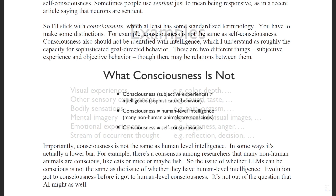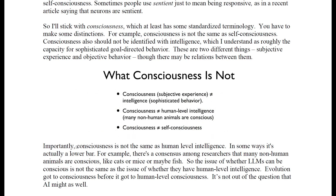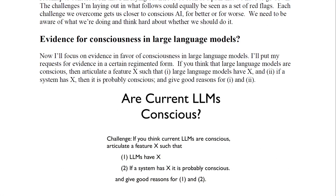It's important to note that consciousness is not synonymous with human-level intelligence. Researchers widely agree that many non-human animals such as cats, mice, and even fish exhibit consciousness. Therefore, the issue of whether large language models can be conscious is distinct from whether they possess human-level intelligence. Evolution arrived at consciousness before human-level consciousness, so it's not impossible for AI to achieve it as well.